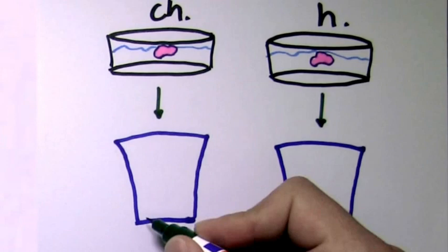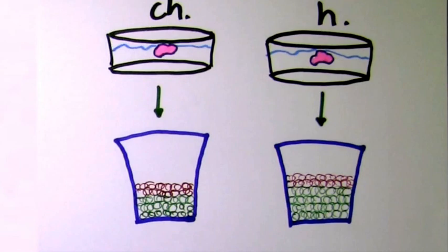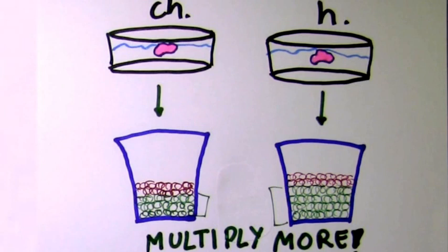Also, in the developing cortex there are different types of brain stem cells, and we saw similar proportions of them in both species, although the proportion of those that multiply more was a bit higher in humans. This makes sense for growing a bigger brain.